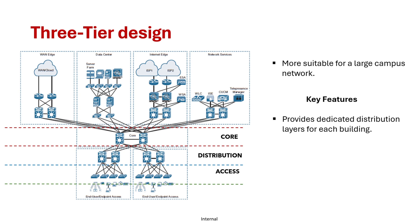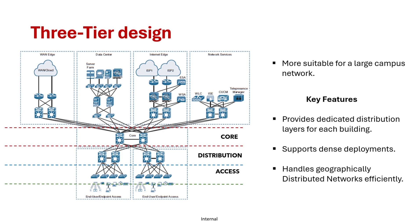The distribution layer is also distributed and supports dense deployment with multiple blocks like WAN, internet, data center, and network services, so it can accommodate growing demands. It handles dispersed access switches and interconnected distribution layers efficiently. It is designed for north-south traffic with data flowing between end users and blocks such as WAN or data centers, ensuring better traffic management, fault isolation, and scalability. The data center is an exception because modern data centers follow the spine-leaf design to manage east-to-west traffic movement.